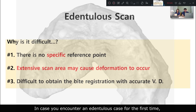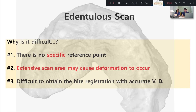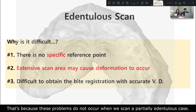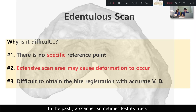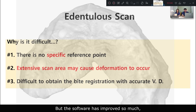When you encounter an edentulous case for the first time, you may be confused about what to do. That's because these problems do not occur when you scan a partial edentulous case. In the past, a scanner would sometimes go off track and stop while scanning edentulous cases. But the software has improved so much that now the scanner can record location with high precision.